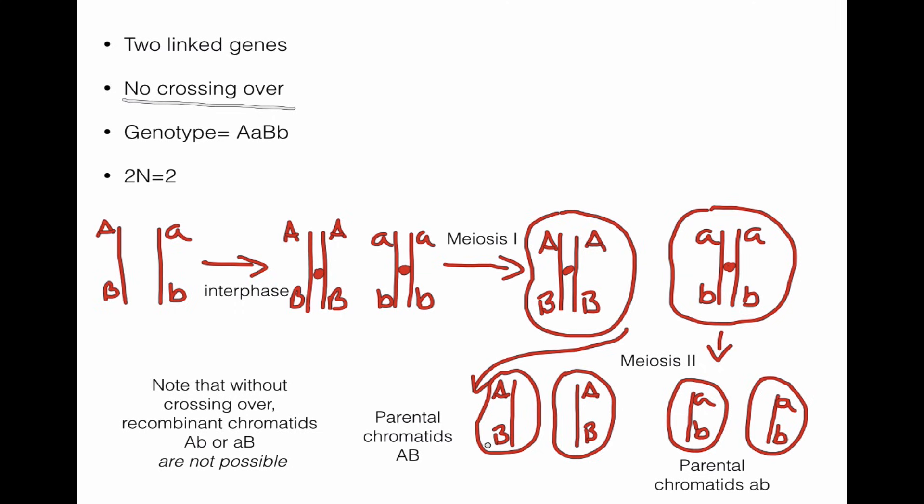we end up with one set of gametes right here that are just like one of the parents. So we call these parental because they're big A, big B. And we have another possibility over here from the other cell, which is little A, little B. So that's the other parental chromatid. Notice, this is real important, that there are no recombinants, which means there are no gametes possible that are big A, little B, or little A, big B, which would be the recombinants. They're not possible.